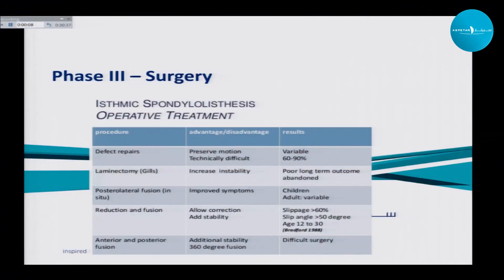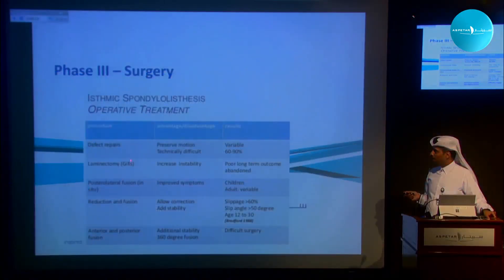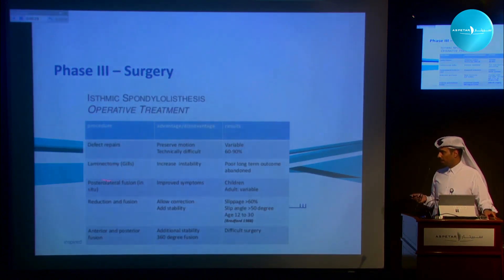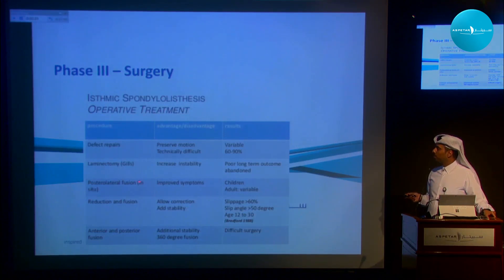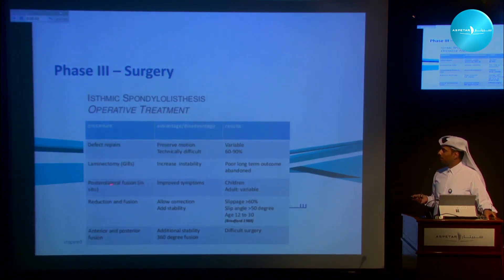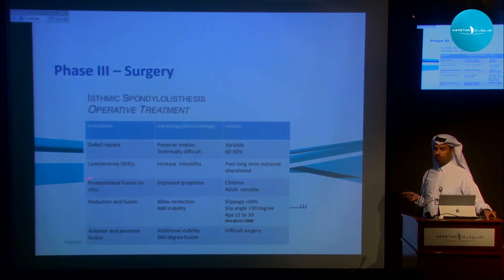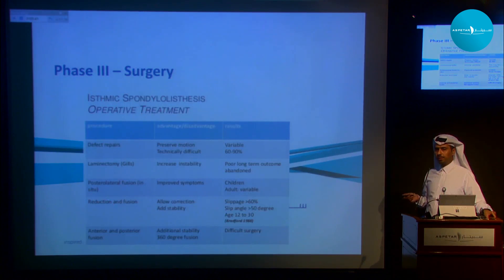Along the history, many surgical procedures have been developed. The most effective is the defect repair. Laminectomy has been abandoned because it destabilizes the spine. Posterolateral fusion might be a good option in some cases, but you have to remember that fusing a motion segment means the patient will lose some range of motion, which will affect their sports career.